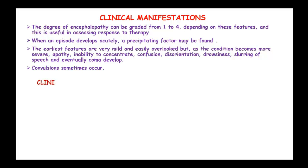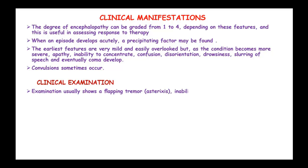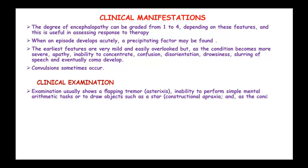Convulsions can sometimes occur in these patients. Examination usually shows a flapping tremor known as asterixis, inability to perform simple mental arithmetic tasks or to draw objects such as a star — known as constructional apraxia — and as the condition progresses, hyperreflexia, extensor plantar responses develop.